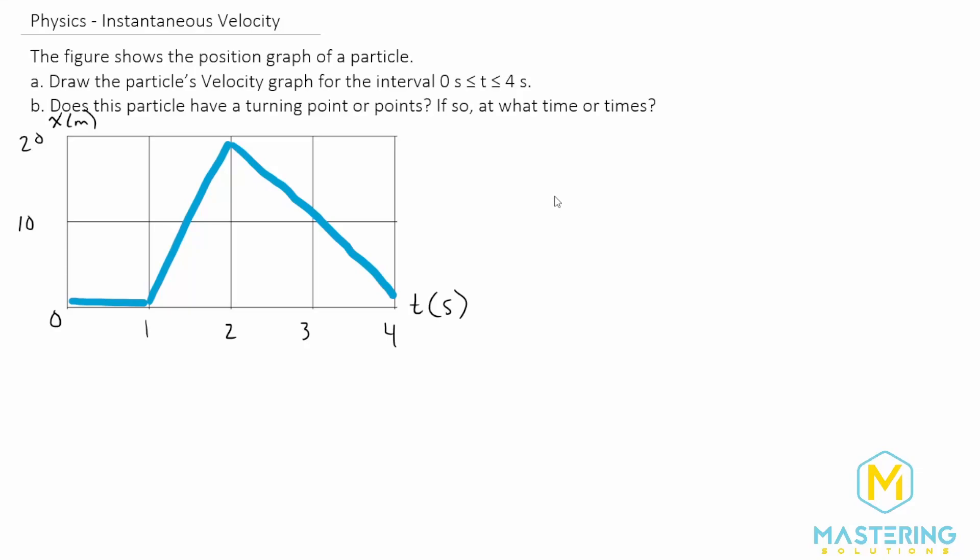Welcome to Mastering Solutions. In this problem, they want us to take this position versus time graph and draw a velocity graph from it. And then they also want us to figure out if there's any turning points.